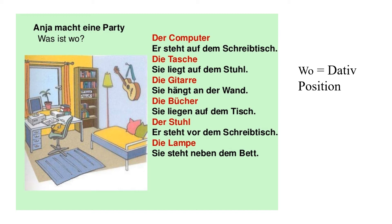Wo sind die Bücher? Sie liegen auf dem Tisch — they are lying on the table. Auf dem Tisch — der Tisch changes to dem. Wo ist der Stuhl? Er steht vor dem Schreibtisch — it is placed in front of the writing table. Vor means in front. And the Lampe — wo ist die Lampe? Sie steht neben dem Bett. Stehen is to stand, which always comes in Dativ. Das Bett changes to dem Bett in Dativ.